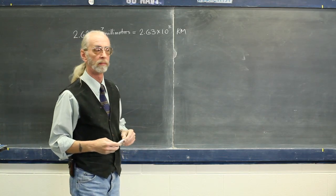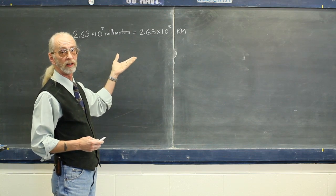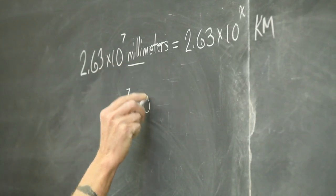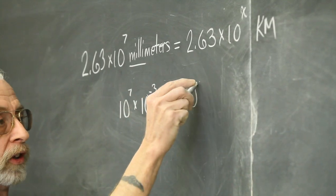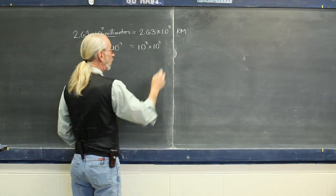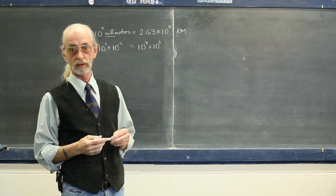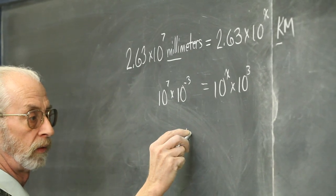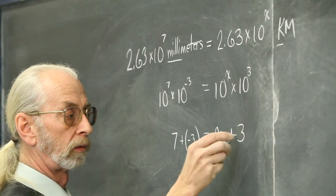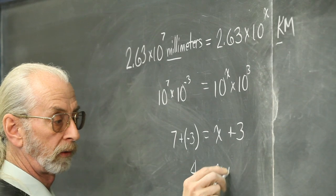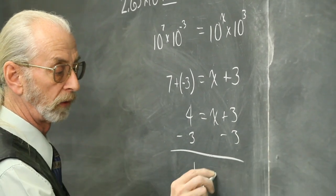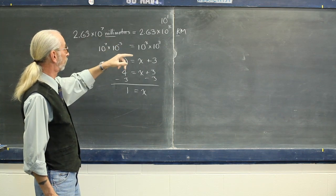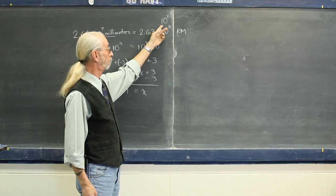Now we've articulated the whole problem and we realize that all we're really worried about here are powers of ten. Left to right we have ten to the seventh times milli — that's ten to the negative third — equals ten to the something x, times kilo, ten to the third. Focusing just on the exponents: seven plus negative three equals x plus three, so four equals x plus three, meaning x equals one. So our answer is ten to the first power. Two point six three times ten to the seventh millimeters equals two point six three times ten to the first kilometers.